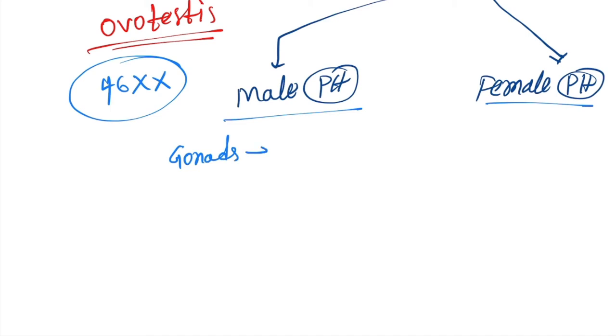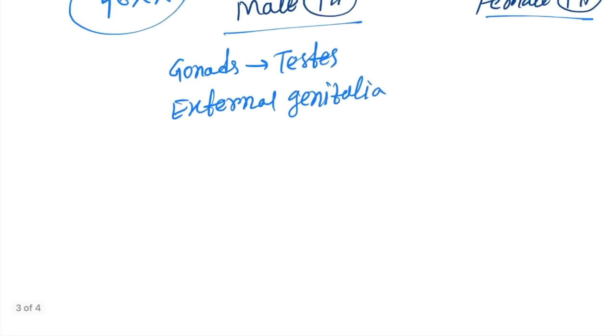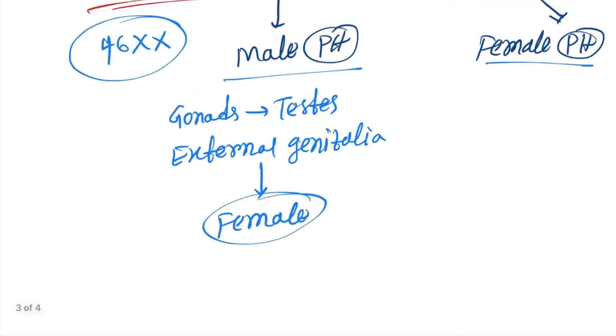Now, male pseudohermaphroditism is where gonads will be testes, and external genitalia will be looking like female.